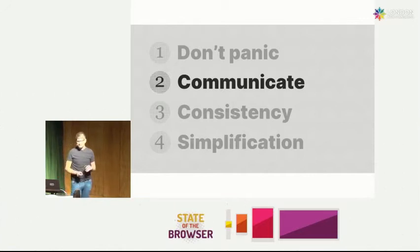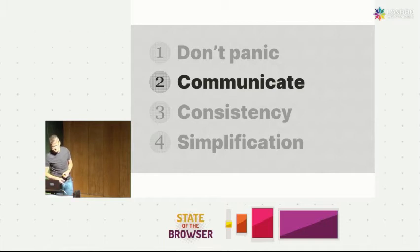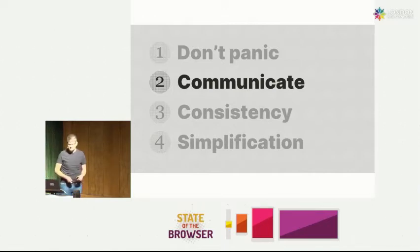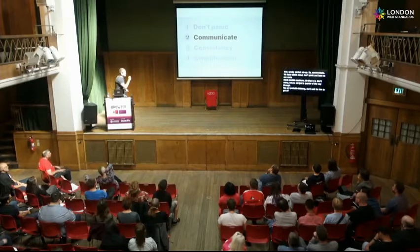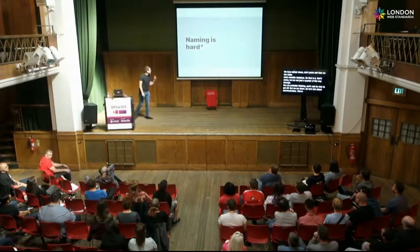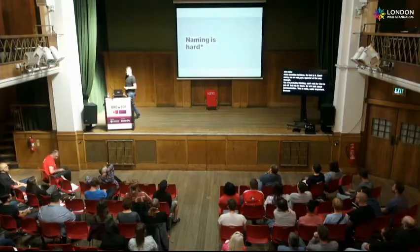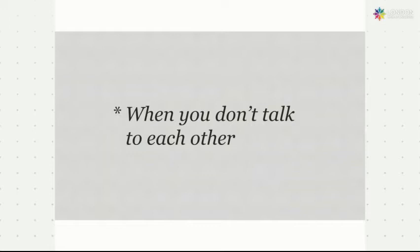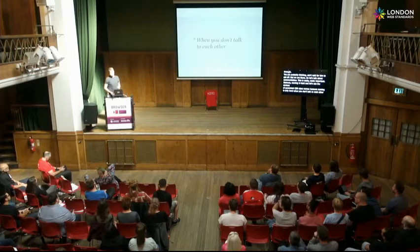So, communicate. We've talked about don't panic and how we can mitigate panic and make more sensible decisions. Let's talk about communication because I think this is really, really important. Because naming is hard — but let's use the context of generated CSS class names. Naming is only hard when you don't talk to each other.